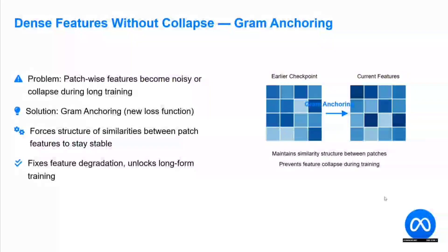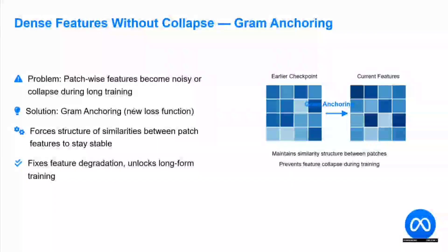They have introduced a new concept called gram anchoring, also described in the research paper. The problem was that patch-wise features become noisy or collapse during long training. To address this, they developed a new loss function called gram anchoring, which forces the structure of similarities between patch features to stay stable.